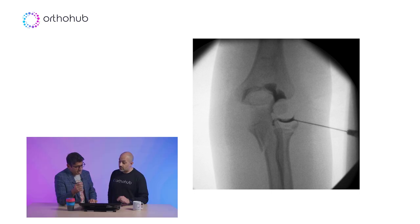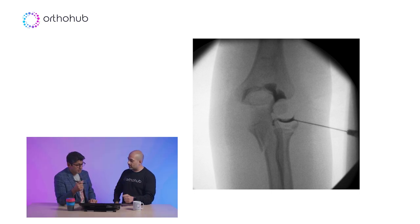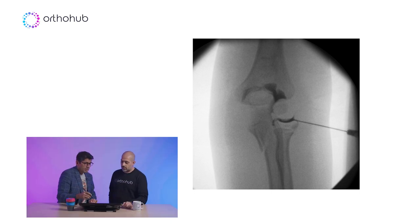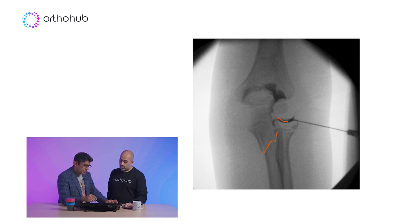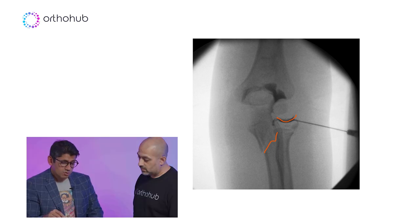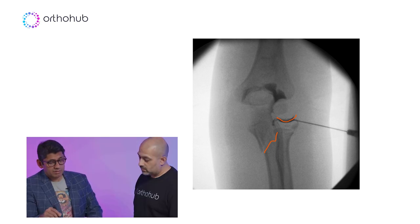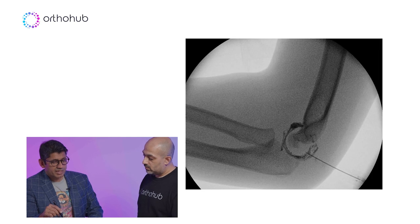Then flex and extend the elbow - flexion and extension is key because it basically squirts the dye around all the articular surface. So for example, this case was actually a Monteggia fracture. You can see the ulnar fracture there. But this is lovely for me to see - I've reduced the radial head and it's in the right place. So that's one way of doing your arthrogram.